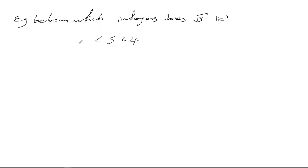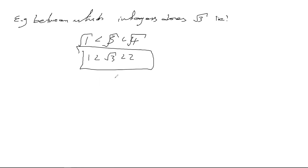So square root of three lies between the integers one and two. Remember, integers are positive and negative whole numbers — not decimals. That is the kind of answer you will be required to produce. I'm not going to dwell on rounding off numbers — you can handle that with your calculator. What I want to talk about now is how we represent numbers on the real number line.